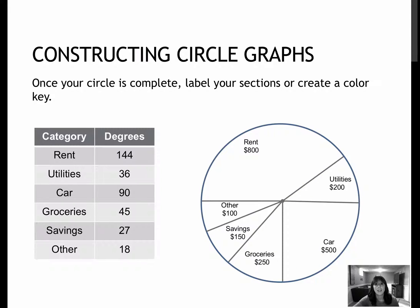Once I've done that, then all I have to do is label my sections as I did. Sometimes people like to use a color key like we had on those other questions where we had A, B, C, and D, and they were color-coded. Or you can just label it right on the circle.